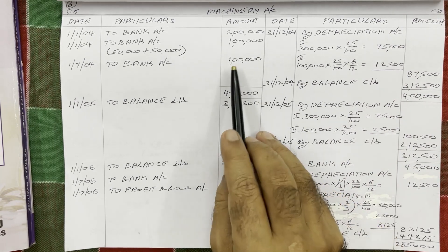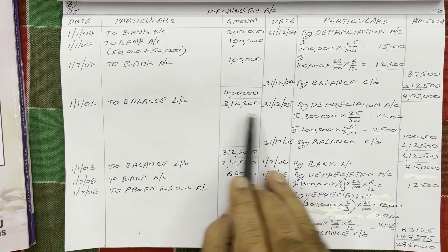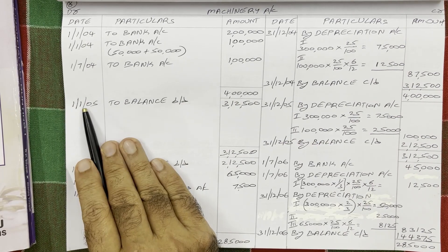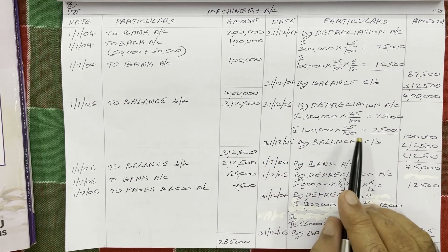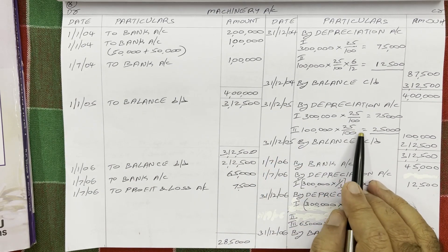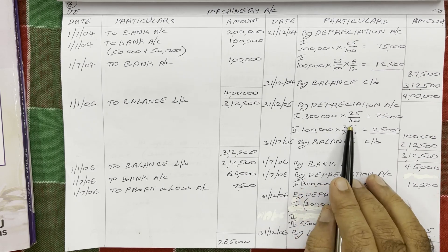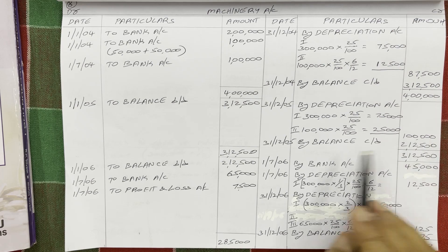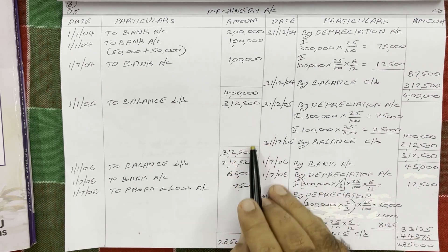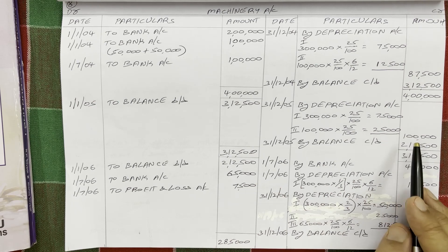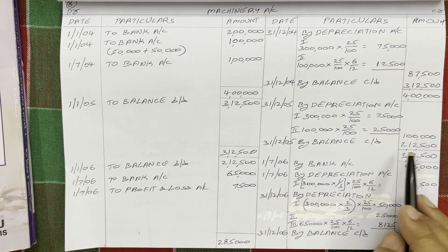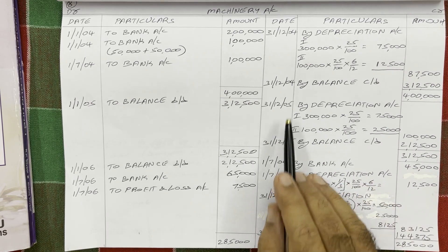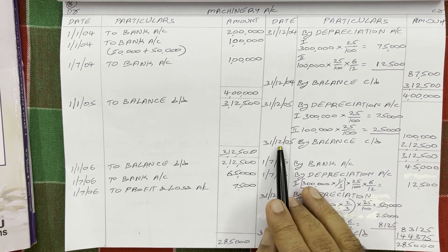Second asset: 1 lakh worth asset is also used for the full year in 2005 — from 1st January to 31st December — so months are not required. On 1 lakh at 25%: 25,000. Total depreciation in outer column: 1 lakh. Balance carried down: debit total 3 lakh 12,500 minus credit 1 lakh = 2 lakh 12,500. Date is 31st December 2005.